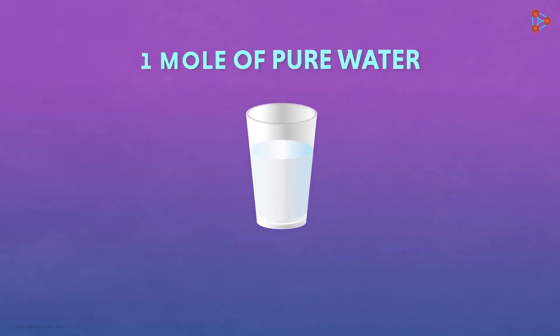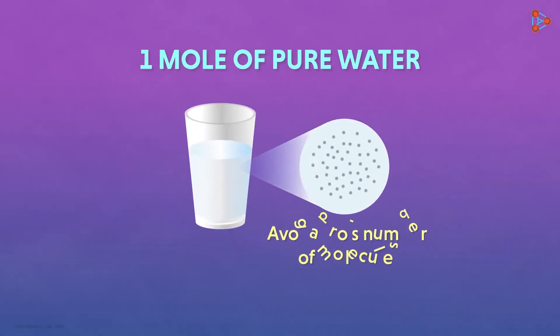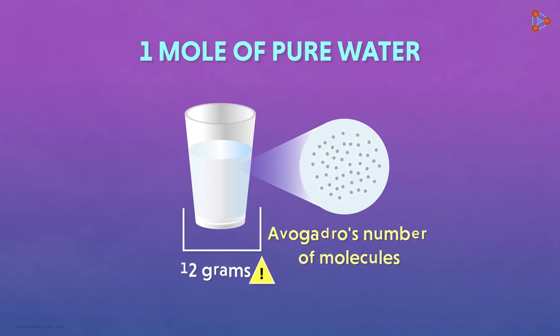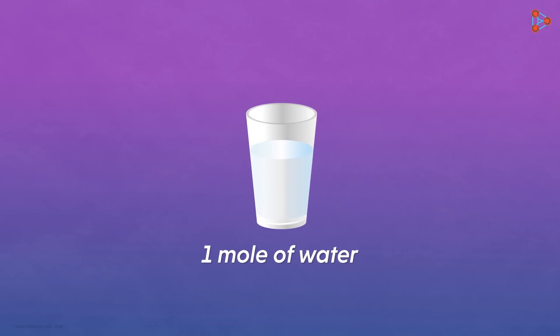Similarly, one mole of water will have Avogadro's number of molecules, but it will not weigh 12 grams. So if we take one mole of water and find its mass, we get the answer as 18.015 grams of water. And I am sure you know why.